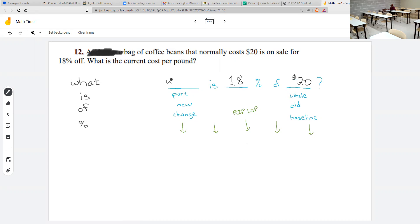So the last thing is our what. That's the setup. Then we translate: what becomes y, is becomes equals.